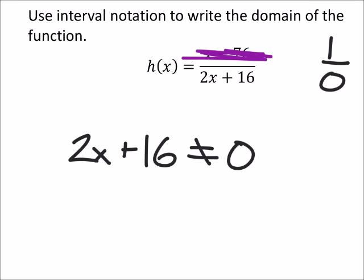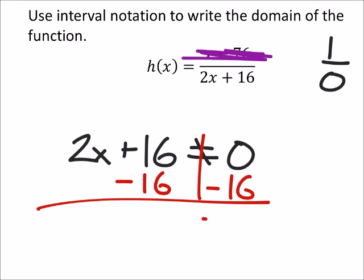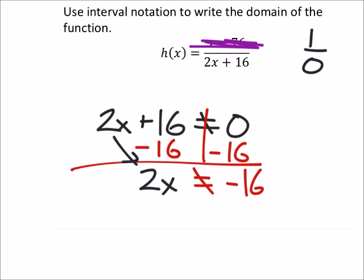So I'm just solving this inequality for x. I would subtract 16 from both sides, and it's still not equal to. So I got my 2x here, and 0 minus 16, you could put that into a calculator, negative 16. Now we'll divide both sides by 2, and we get x cannot be negative 8.